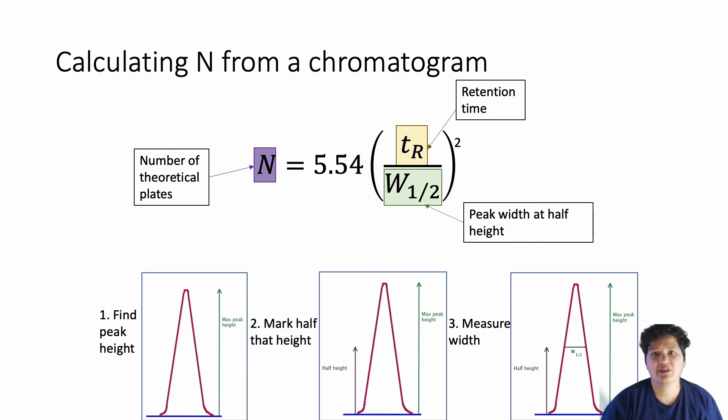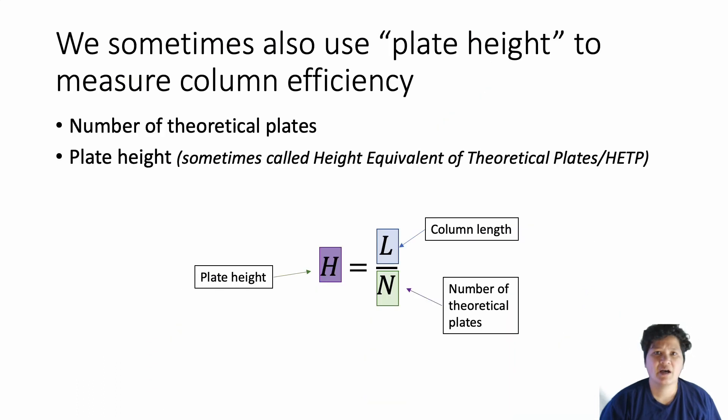The number of theoretical plates tells you how well your column holds onto your analyte. The more theoretical plates you have, the longer it will hold onto it. Another way to think of how many transitions there are is the plate height of your column. This is the actual distance a molecule of analyte travels between phase transitions. So you calculate this by dividing the length of your column by the number of theoretical plates.